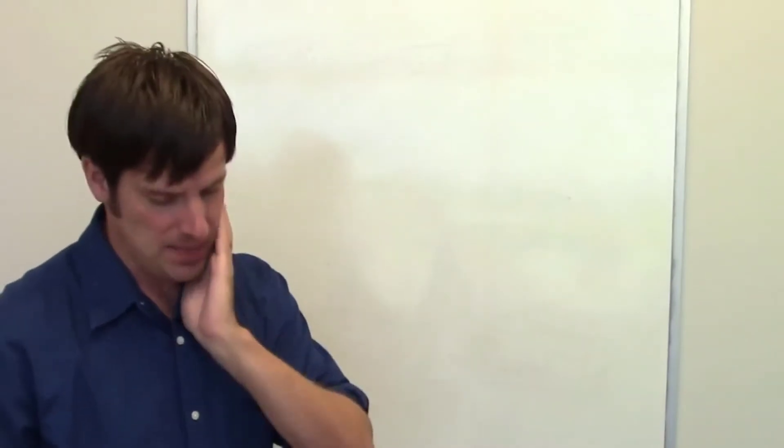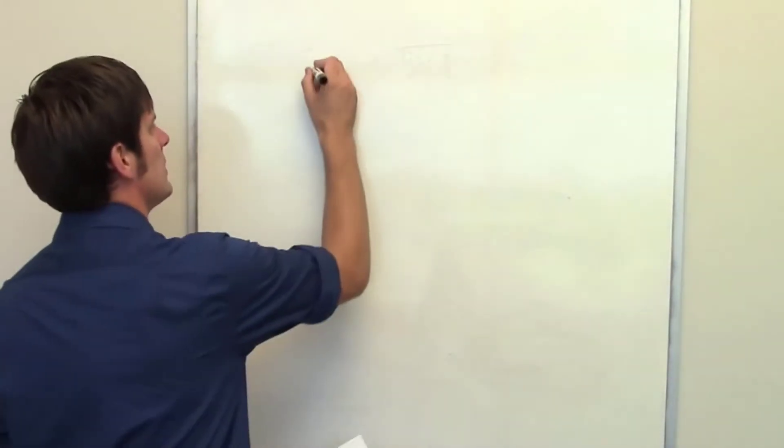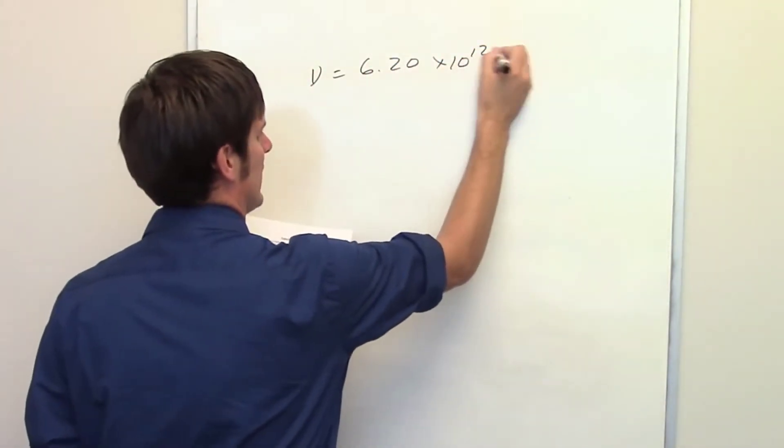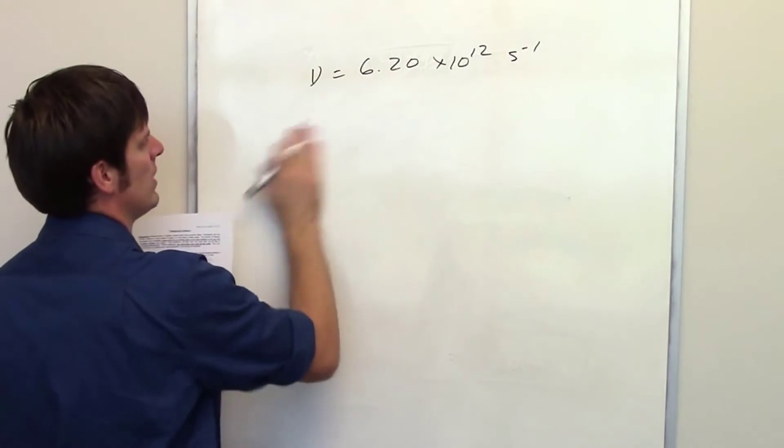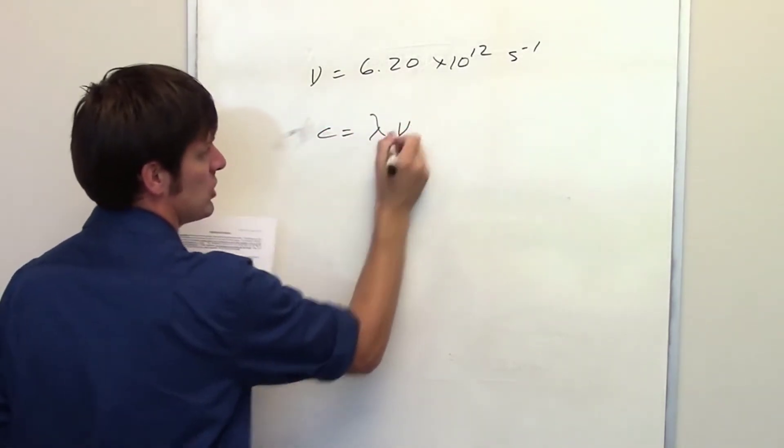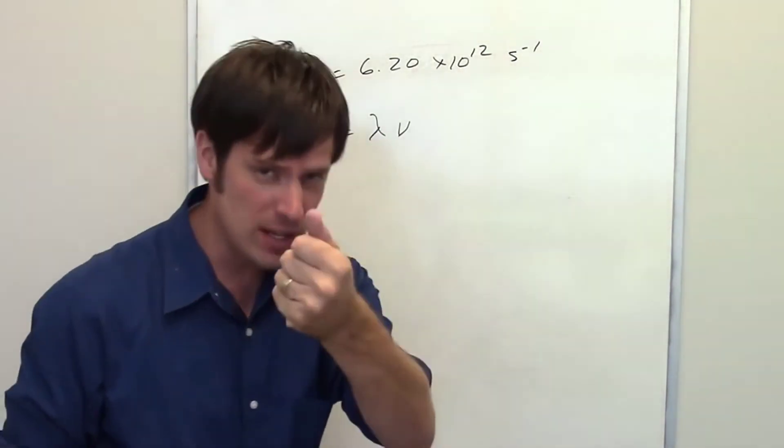In the second problem in this set, we're asked what the wavelength is of a radiation with a frequency of 6.2 times 10 to the 12 inverse seconds. Once again, we know that the speed of light is equal to wavelength times frequency. As we just did, we were given a wavelength and asked to determine the frequency using algebra.